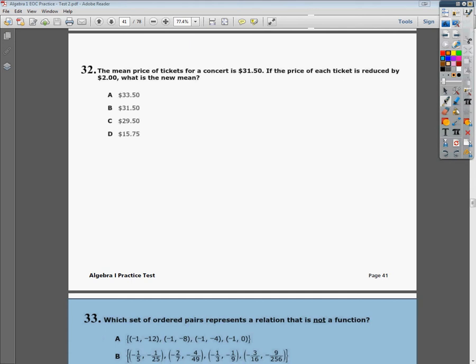The other one is this type, where you're just taking all the data points, you don't know what they are, but they're giving you the mean there, and then they're saying everybody has changed, because it says the price of each ticket. So that means every single ticket is going to change the price, and it's going to reduce by $2.